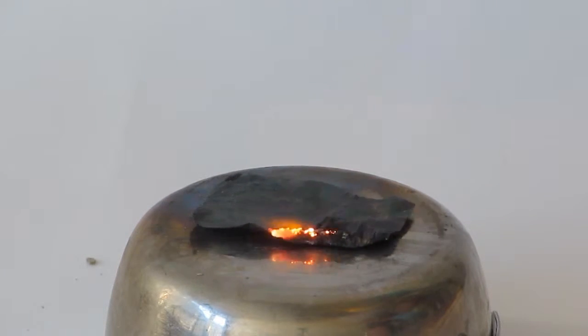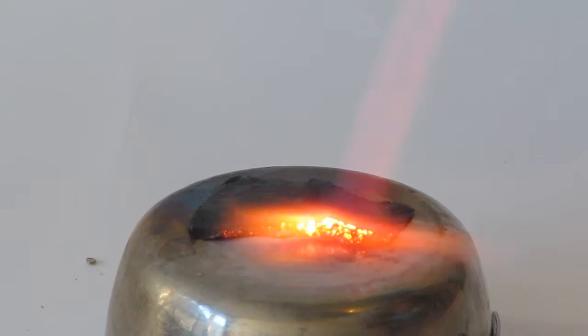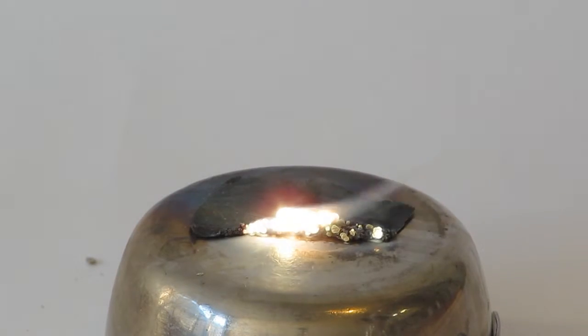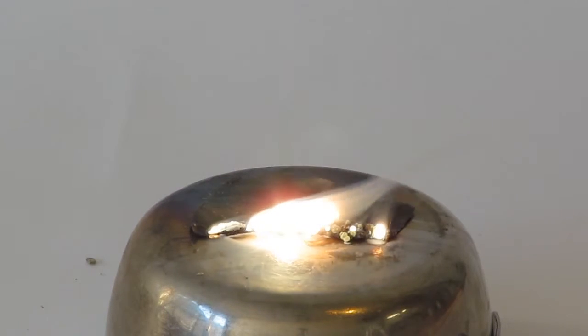For this reaction, we simply take some lithium and light it on fire using a torch. You can see how exothermic this is. It burns white hot. And the smoke coming off is the lithium oxide.